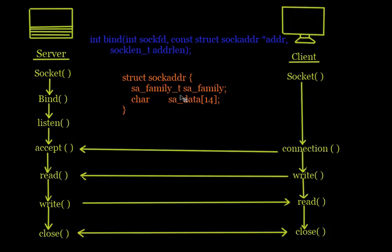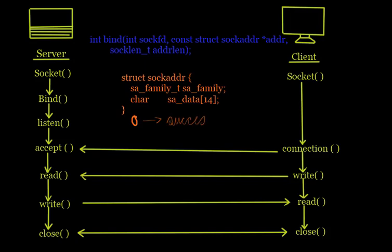addrlen, which is the length of addr, specifies the size in bytes of the address structure pointed to by addr. Looking at the structure of addr: it has sa_family and sa_data whose size is 14 characters. The only purpose of this structure is to cast the structure pointer passed in addr to avoid compiler warnings. This function returns 0 if execution is a success and -1 if it is a failure.